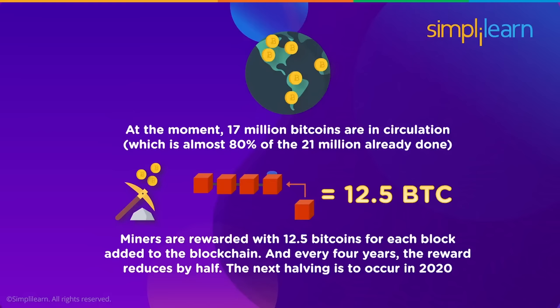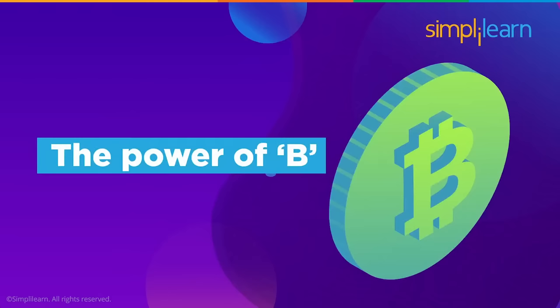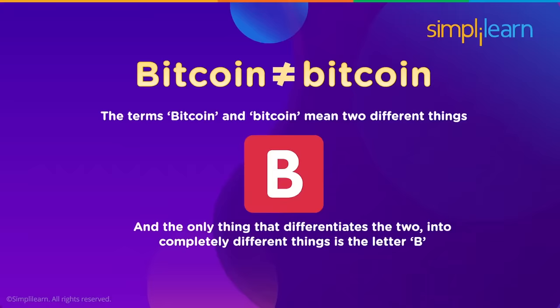Don't worry — until 2140 we will still have bitcoins to mine. This is because of how miners are rewarded: miners are awarded 12.5 bitcoins for each block added to the blockchain, and every four years the reward reduces by half. The next halving is supposed to occur in 2020, where the reward reduces to 6.25 bitcoins.